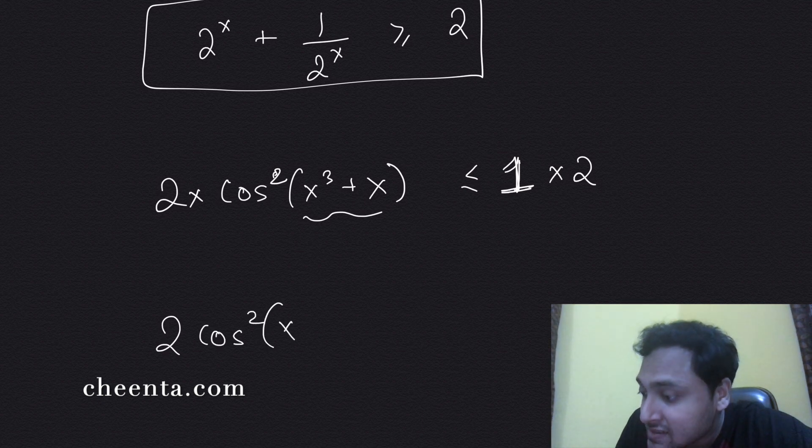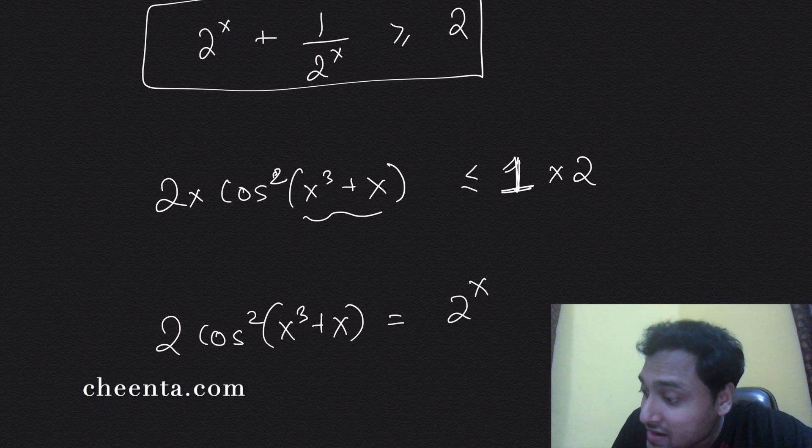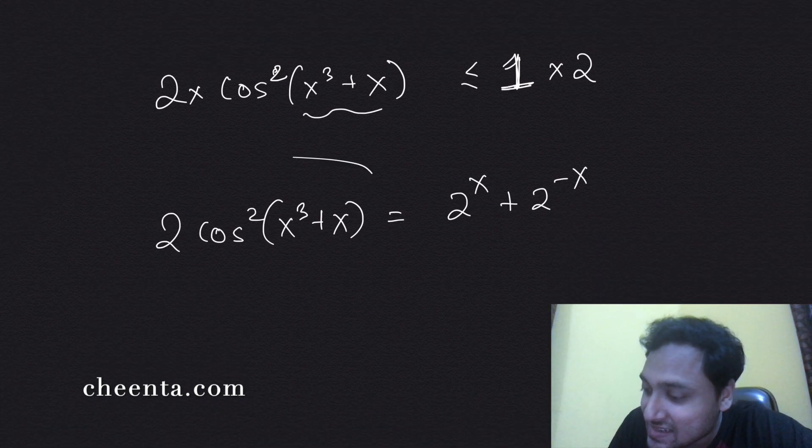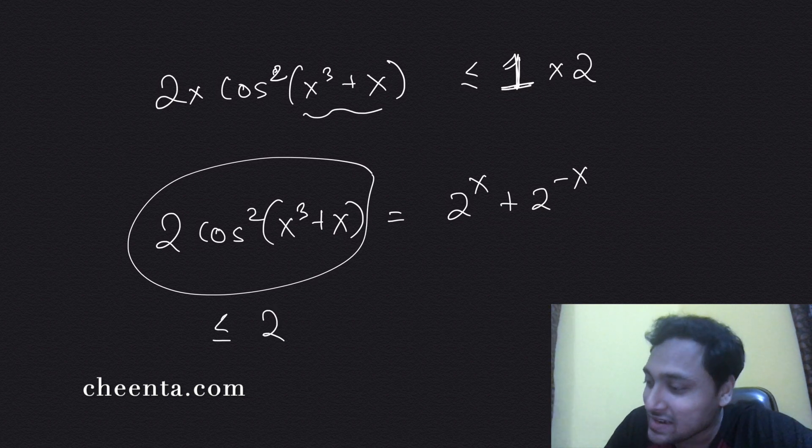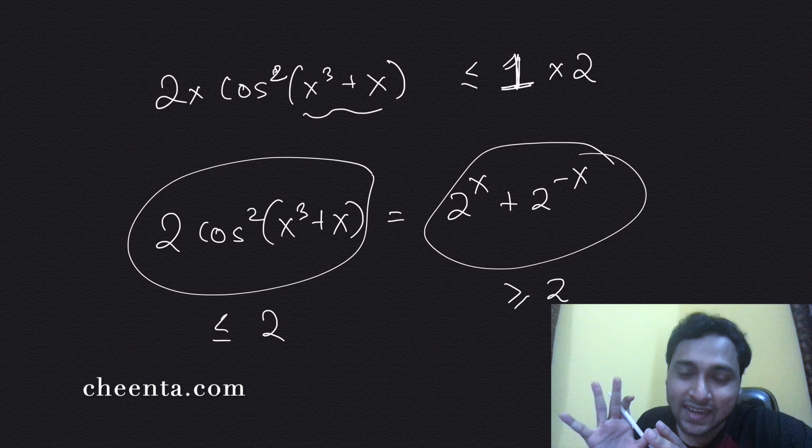So in this equation, 2 times cos² (x³ + x) equals 2^x + 2^(-x). The left-hand side is less than or equals to 2, the right-hand side is greater than or equals to 2. Comparing both sides, we see that the only place they can be actually equal is when both of them are equal to 2.